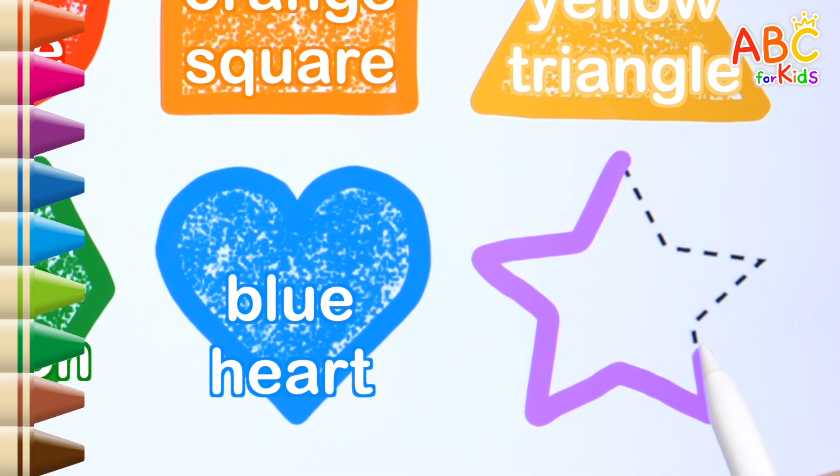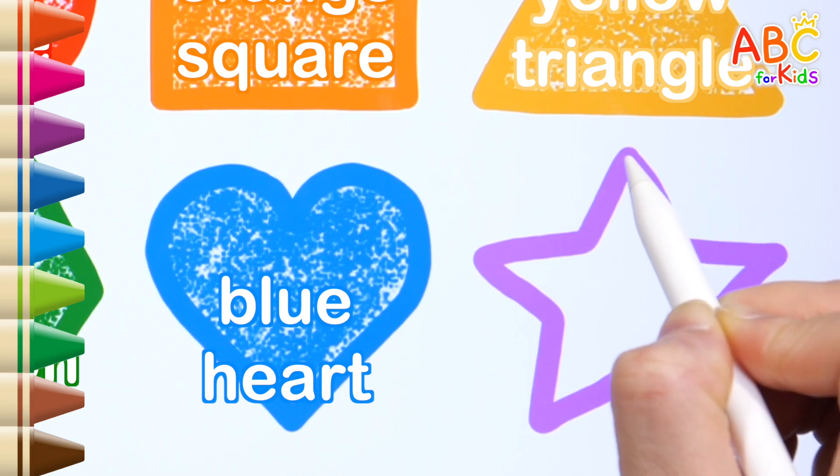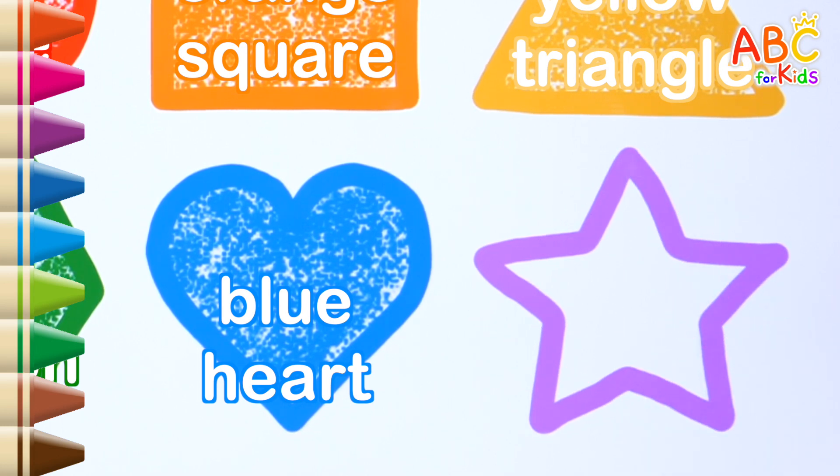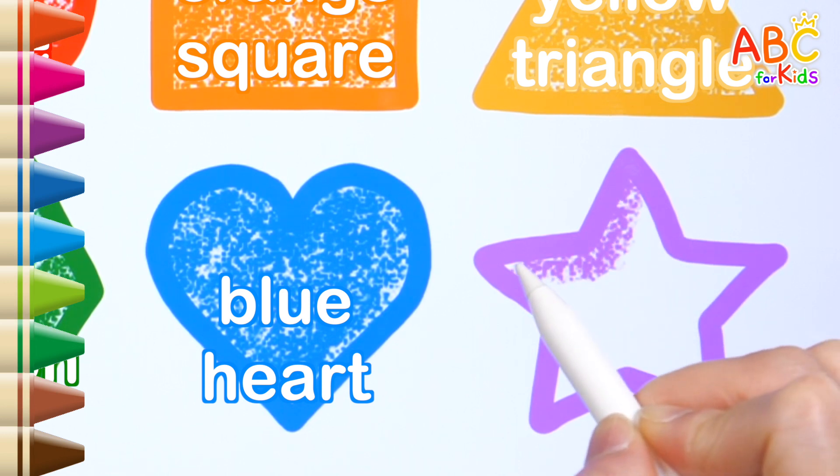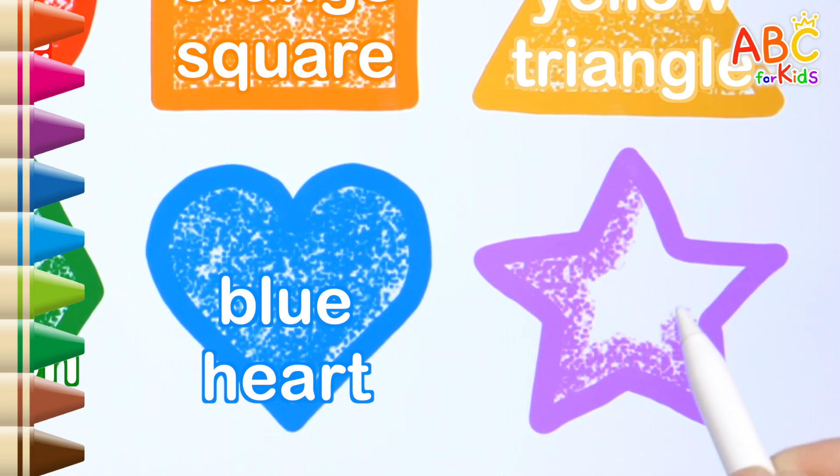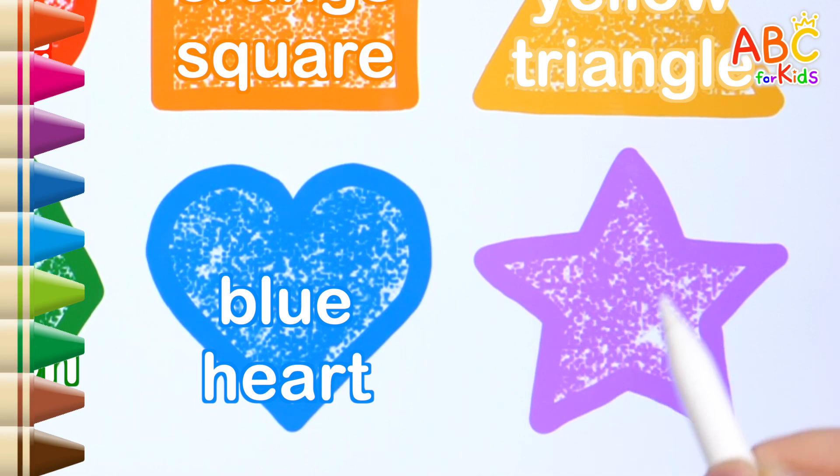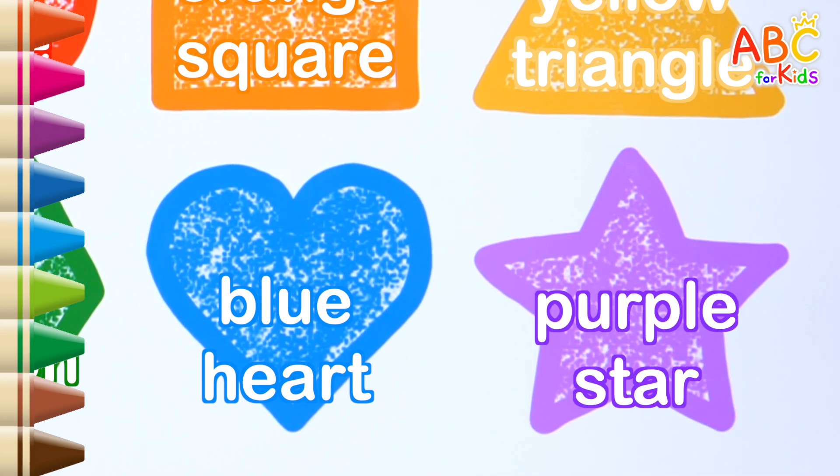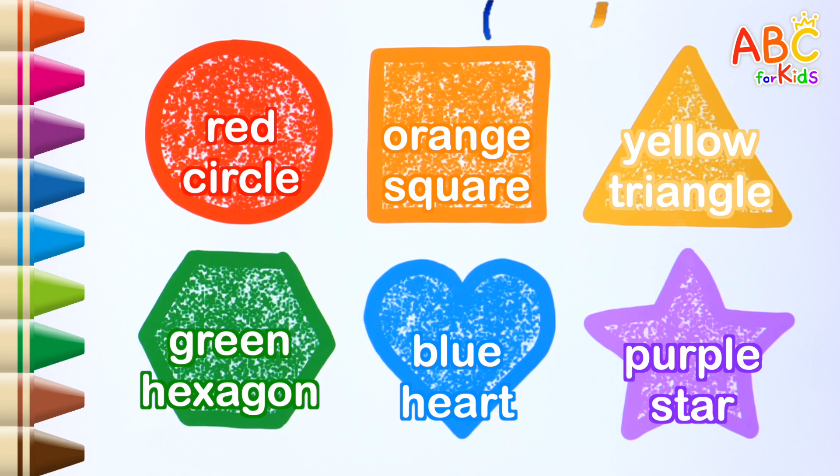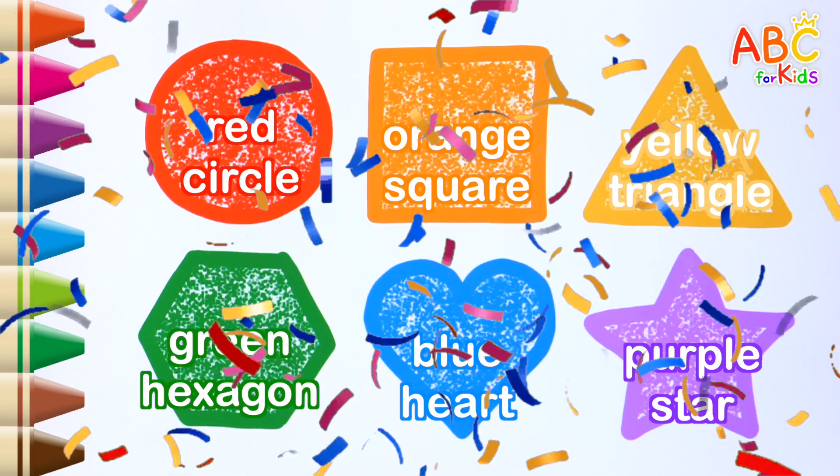Now I know my ABCs. Next time won't you sing with me. What shape is it? That's right, it's a star. Purple. It's a purple star. Good job. Who are you?